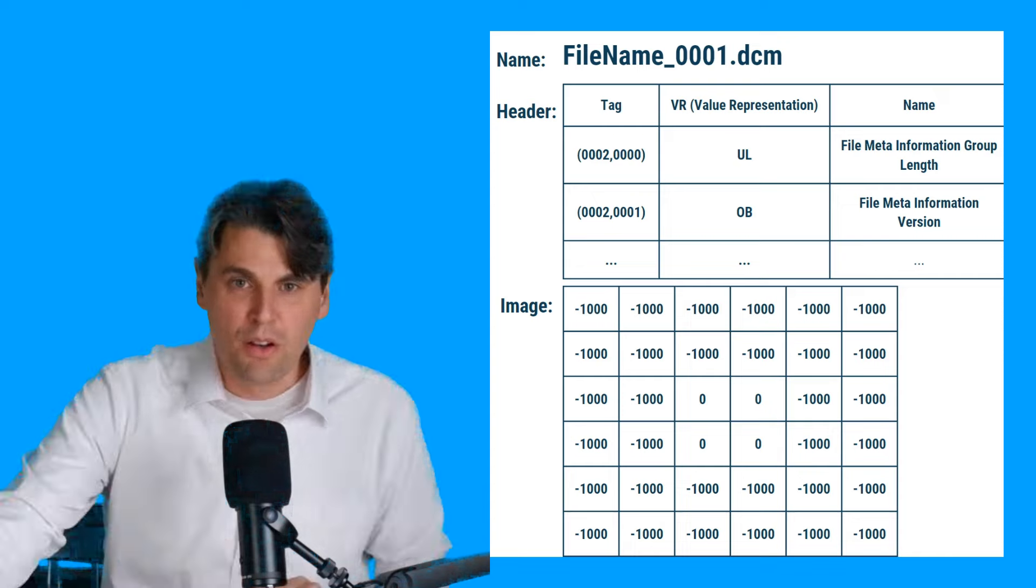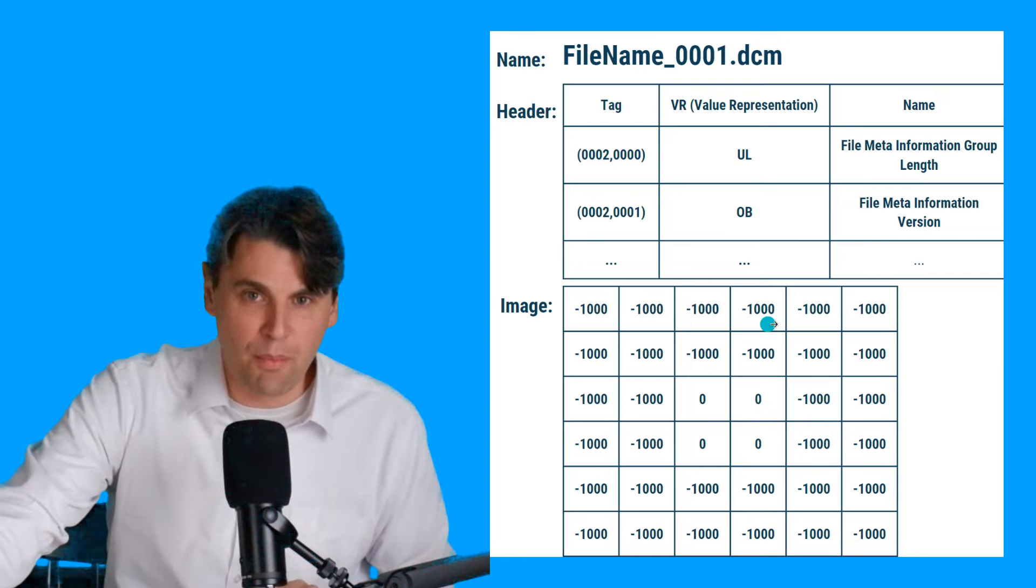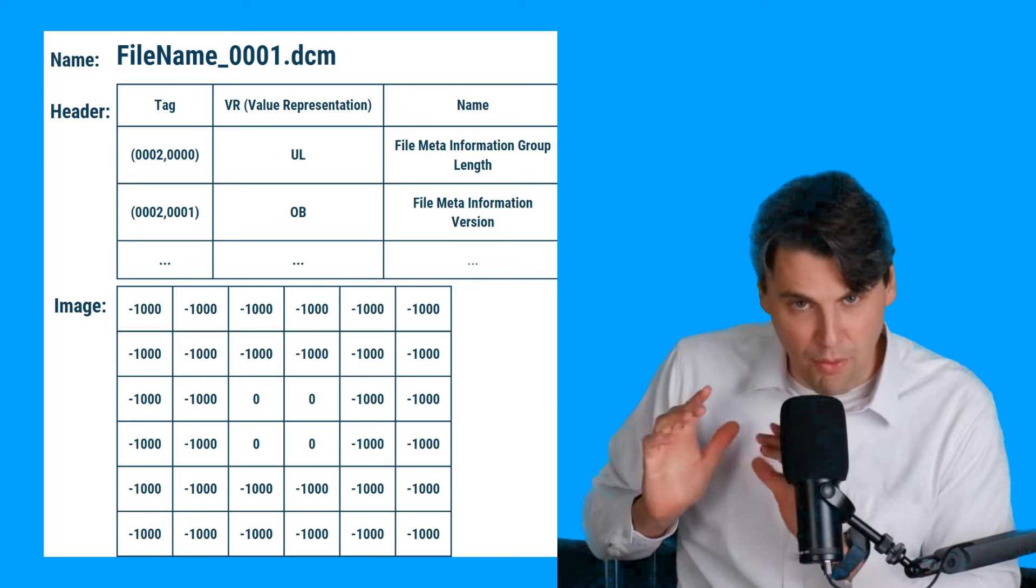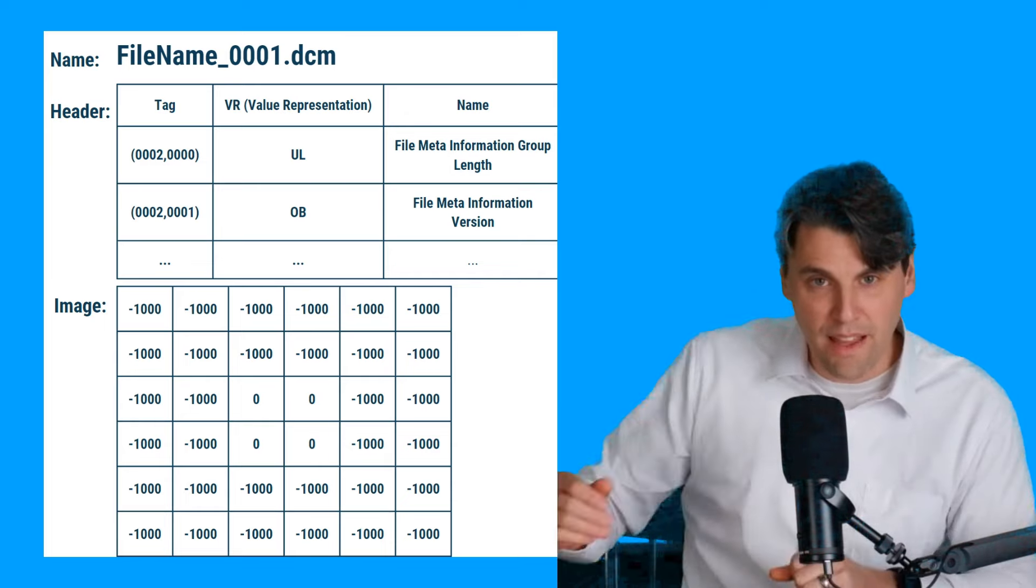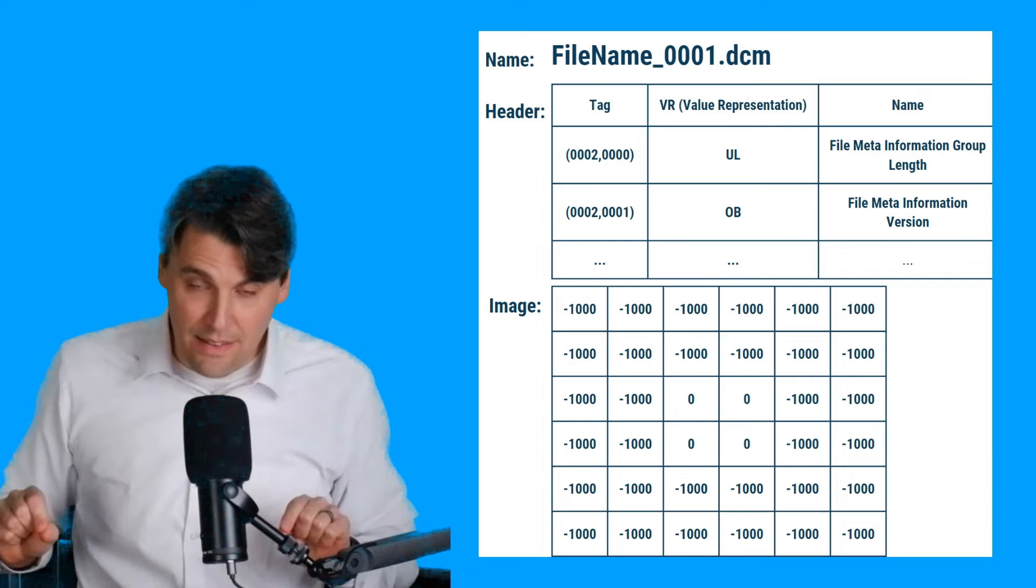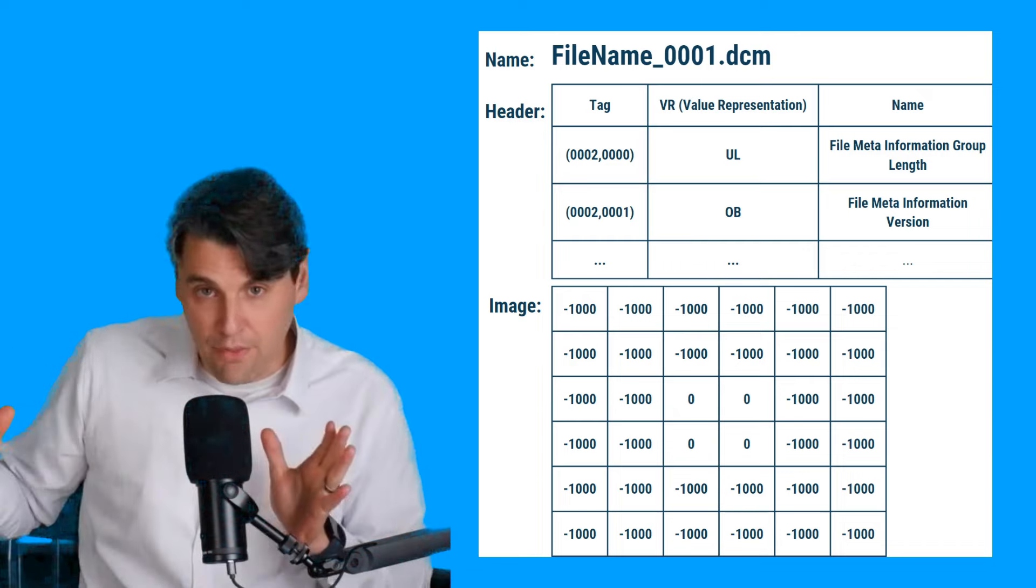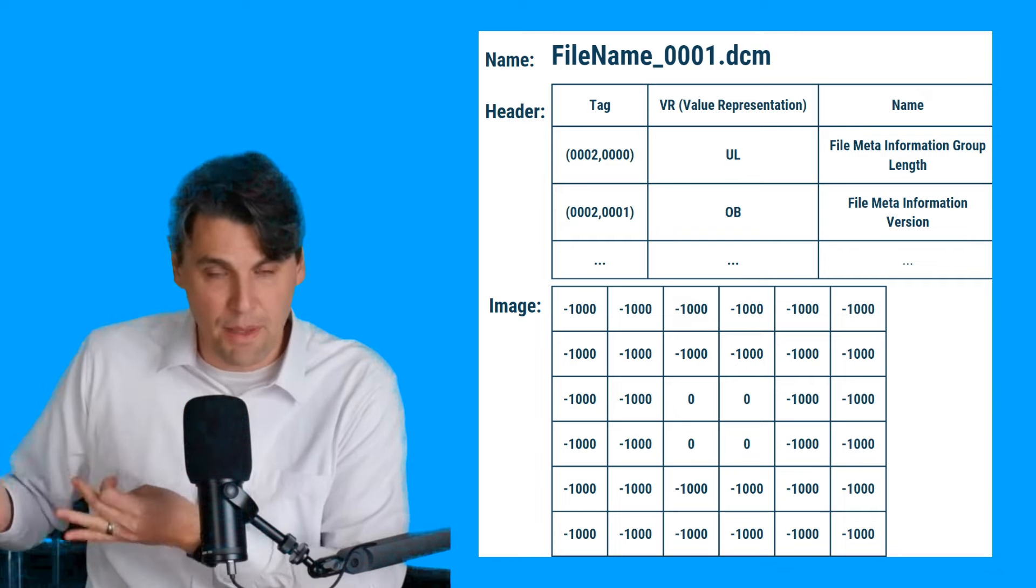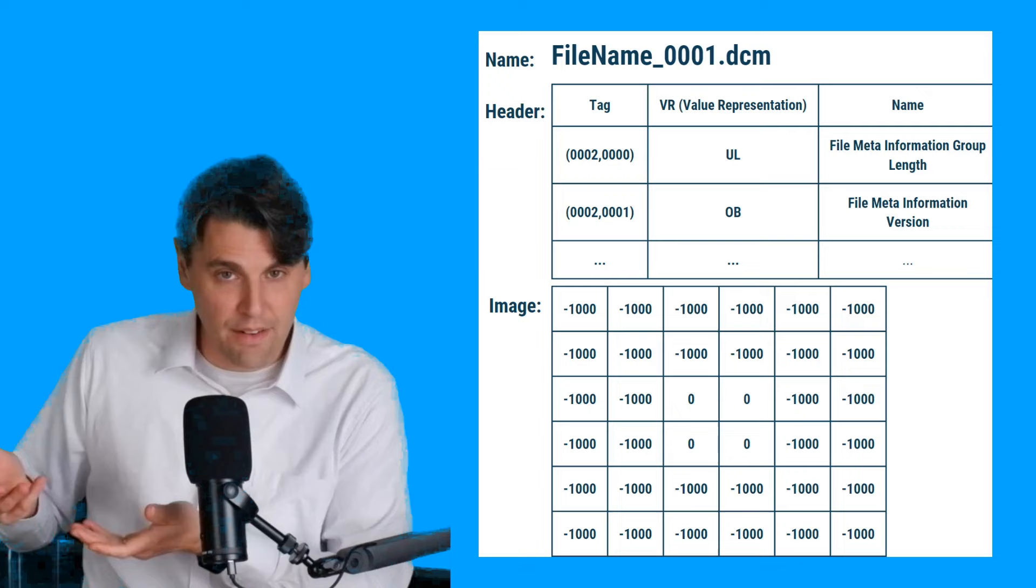And in that image, we just had air as the background. Imagine, and then we had just a little square of water that's in the middle. That's what the image would look like here. Here, I'm only showing 6x6 pixels. You typically have 512x512 pixels, for instance, in the case of a CT image, and many more in the case of a lot of the x-ray images.